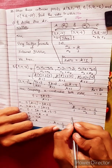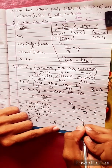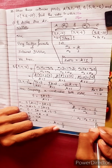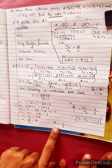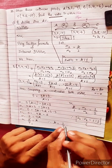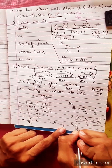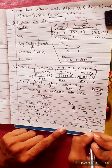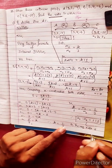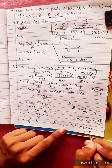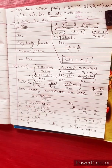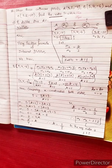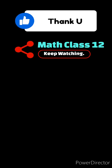Therefore k equals 1/2. So k to 1 equals M1 to M2 equals 1 to 2. Therefore M1 to M2 equals 1 to 2. So the required ratio is 1 to 2.